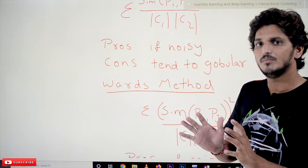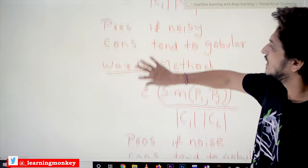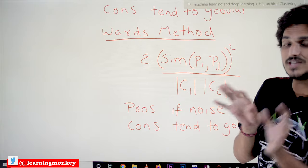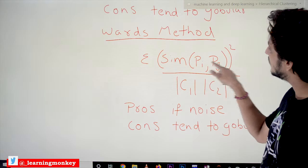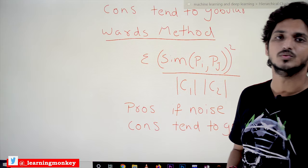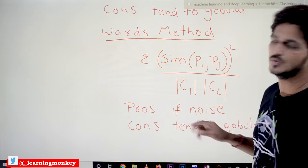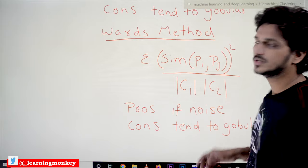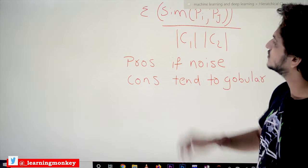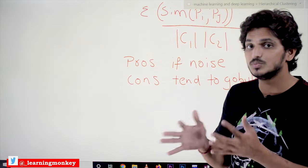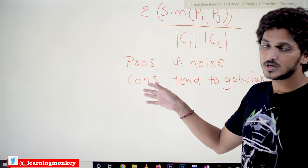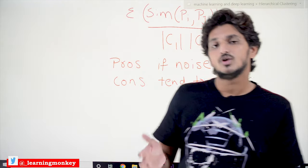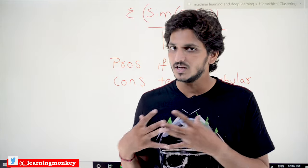The next method is Ward's method. Ward's method is almost similar to group average, but there is a small change in the equation. Instead of just the distance, we square the value: similarity = sum of squared distances d(Pi, Pj)² divided by the number of data points in C1 multiplied by C2. The pros are the same — it is good when we are having noise between the clusters. The cons are also the same — it tends towards globular clusters. These are the different linkage methods, meaning similarity measures, used in agglomerative clustering.